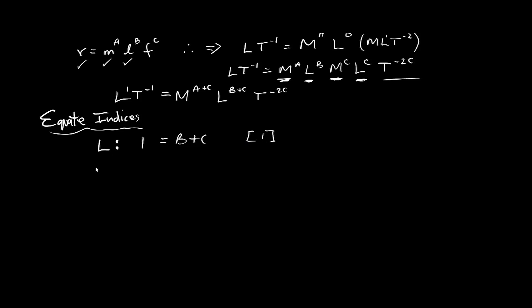We're going to do the same thing for M. So we're going to look at the indices for M. Over on the left here, we don't see an M. So there's nothing there for M. So we'd write zero. Put the equal sign in. Here we can see there's an M with an A plus C power in there. So we're equating those indices. A plus C goes in. This is L stuff. Ignore. This is T stuff. Ignore. And we can call that expression two.